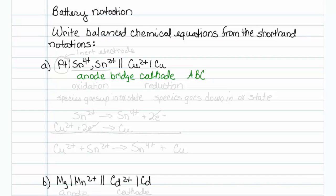What you should also remember is that oxidation occurs at the anode and reduction occurs at the cathode. Oxidation is when the species goes up in oxidation state, and reduction is when the species goes down in oxidation state.